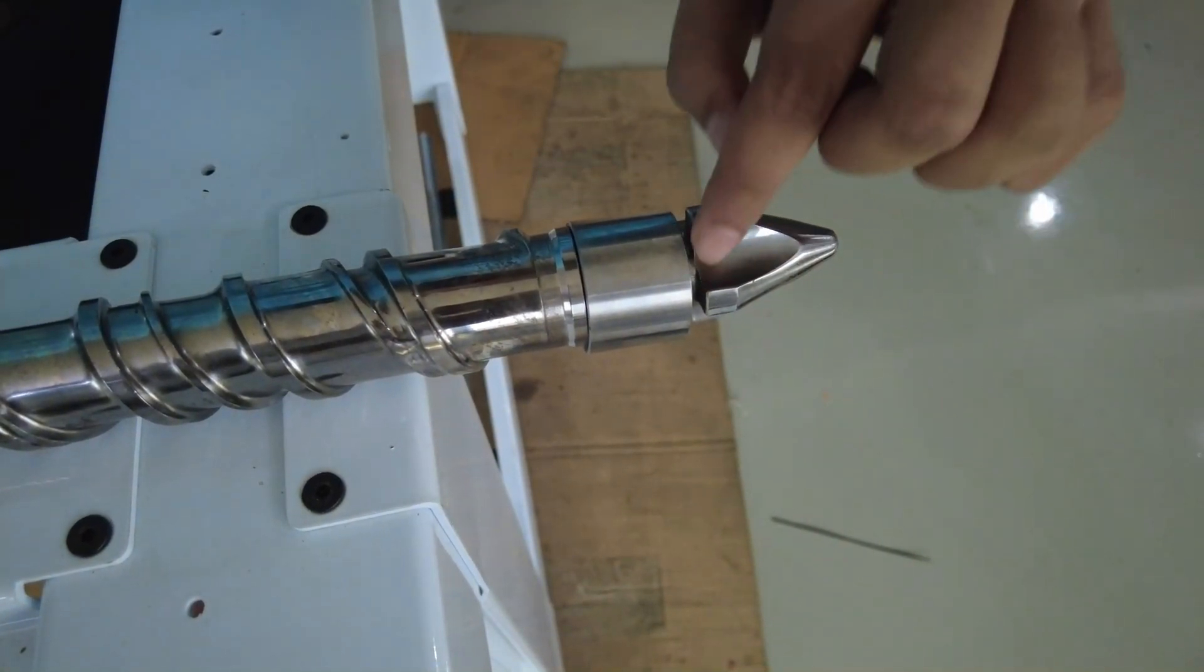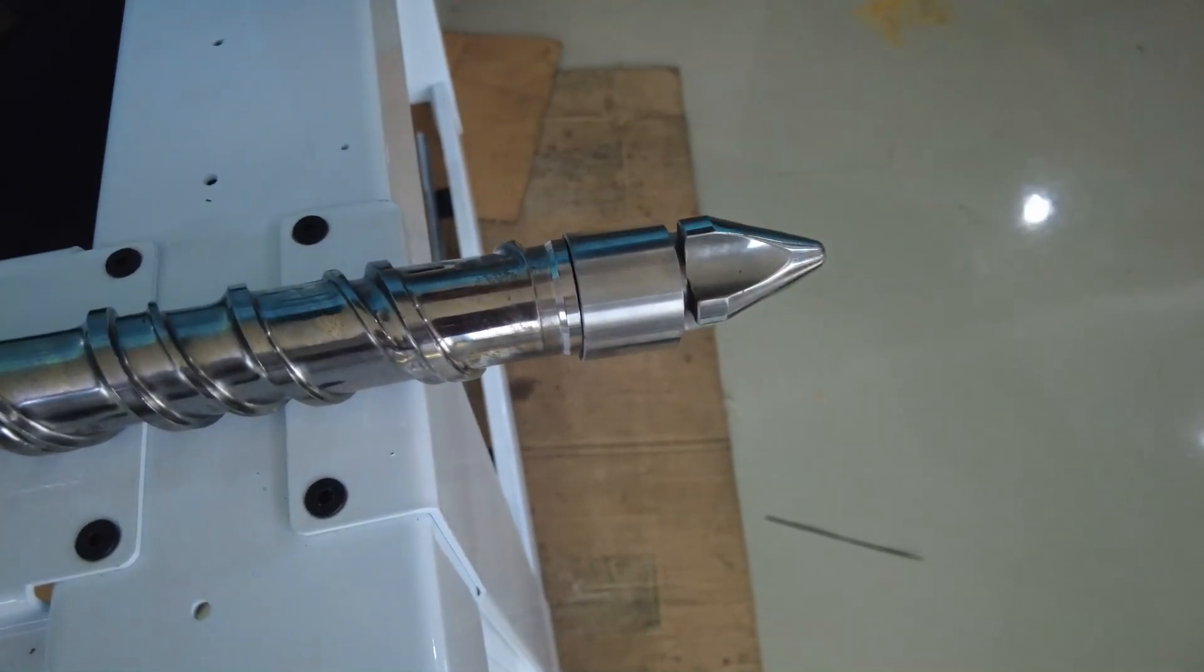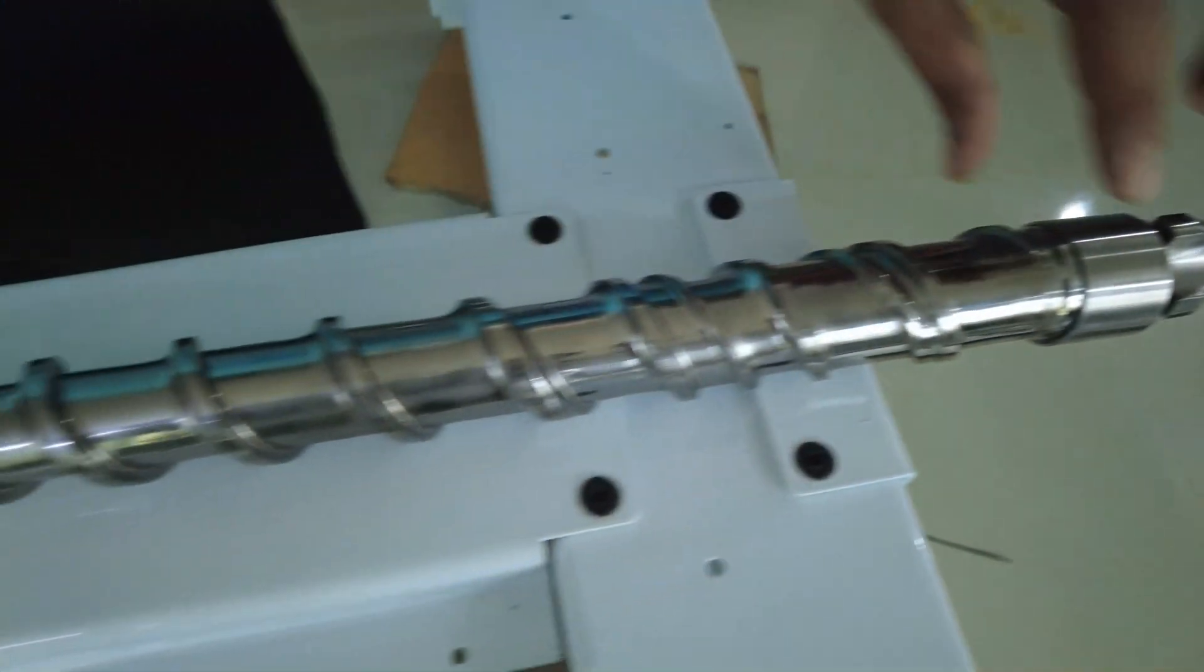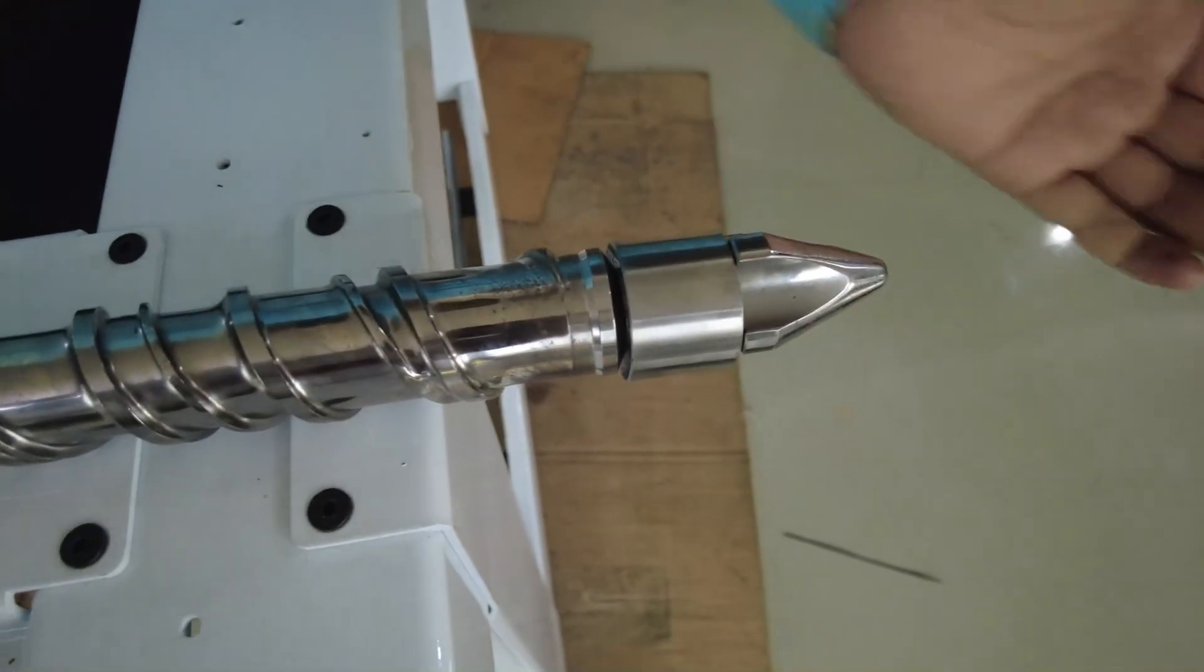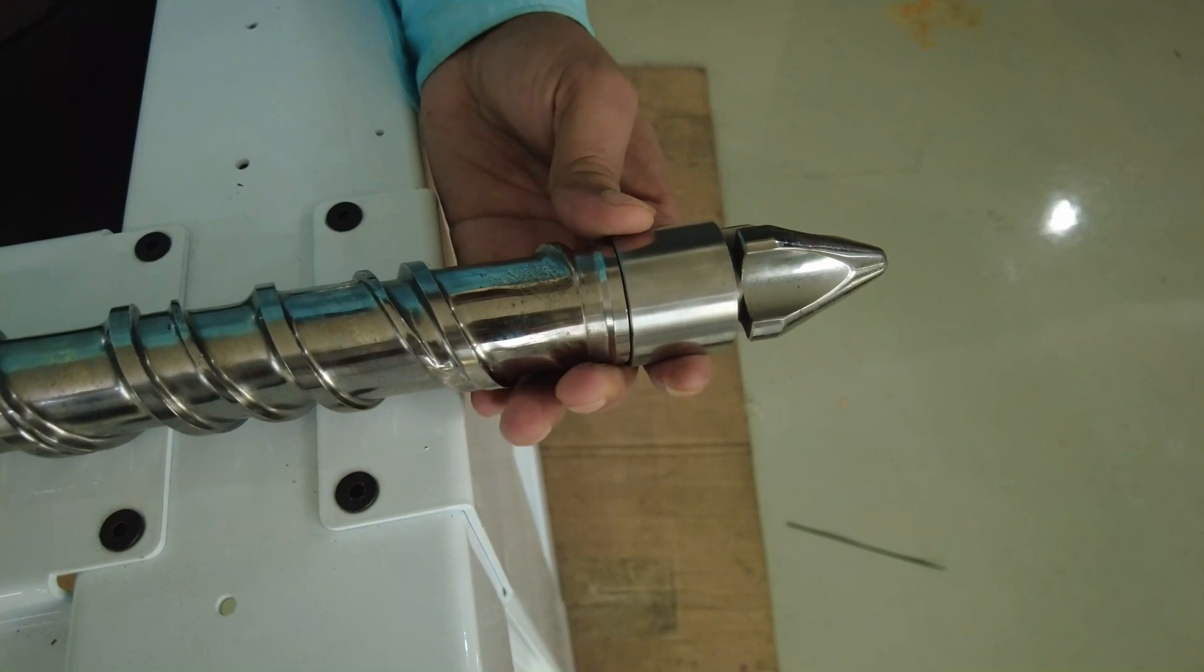Here these openings are where the raw material exits in liquid form during the injection process. After injection, this particular ring moves back to prevent backflow of your material.